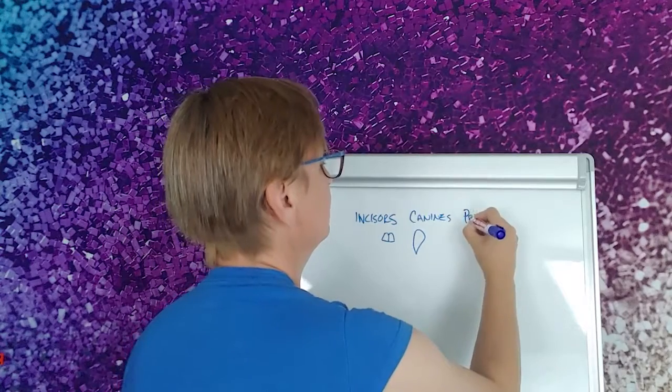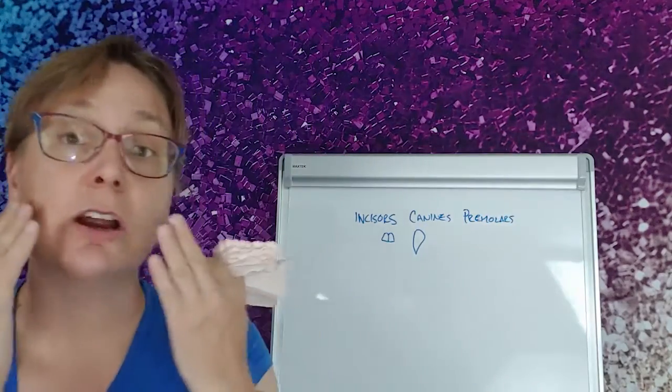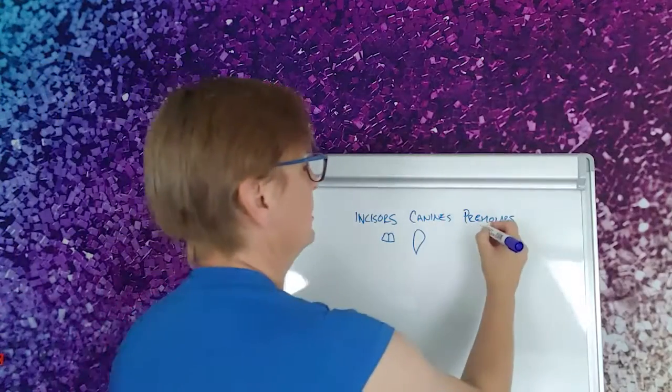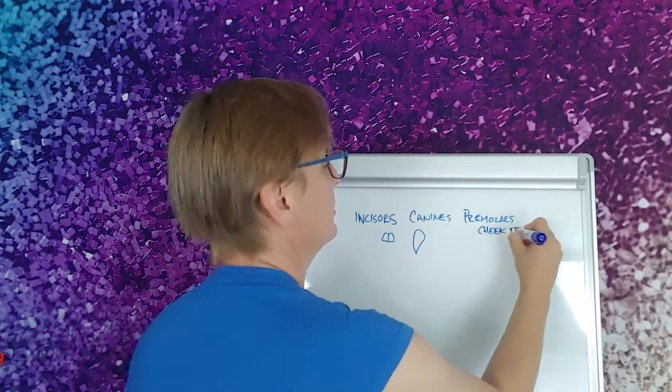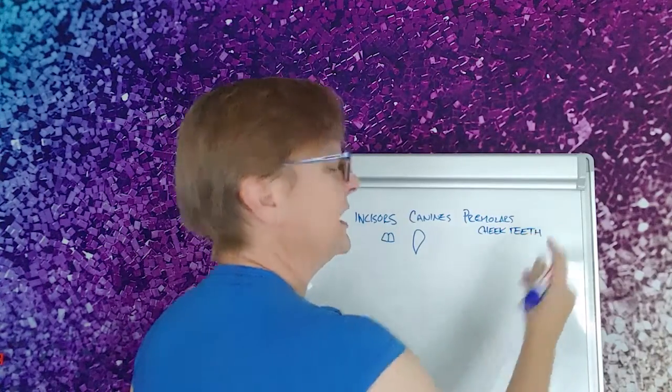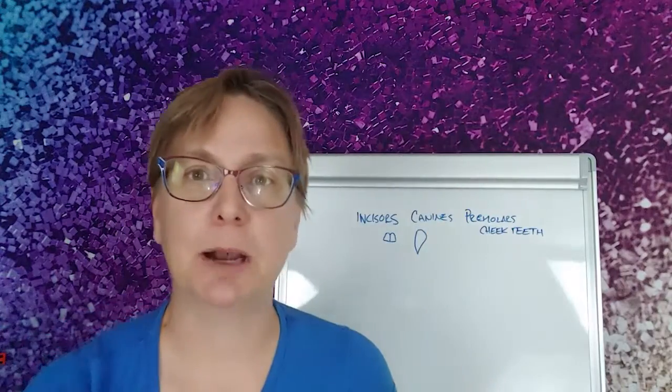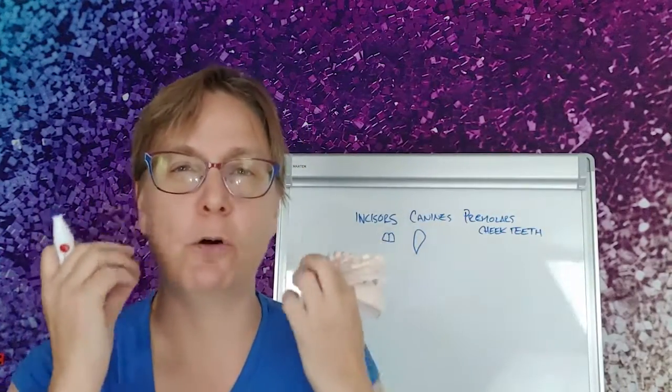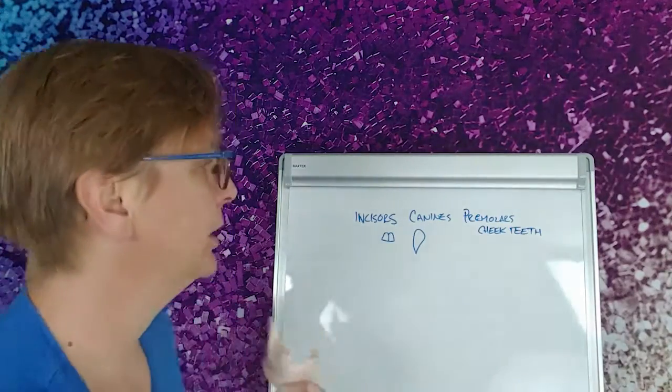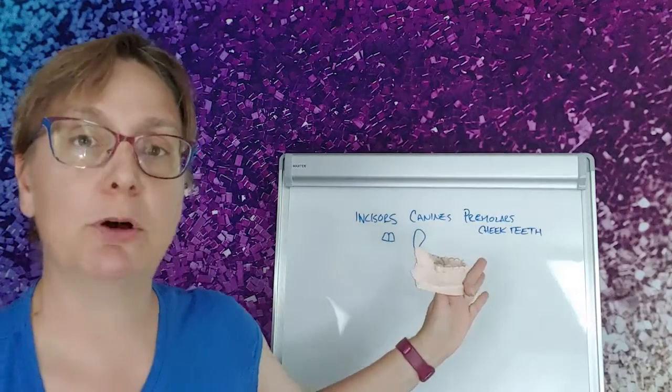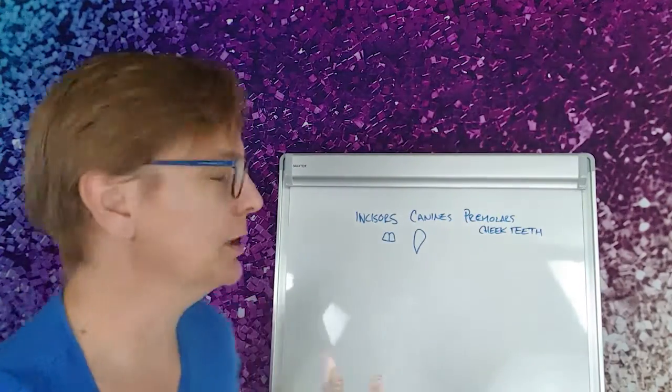We have premolars, which are part of the cheek teeth. Because these are the ones where incisors and canines are for taking bites, the cheek teeth are for breaking them up into bits, the food up into bits that we can swallow. The cheek teeth includes the premolars, which in us we refer to them as the bicuspids because they have two cusps.